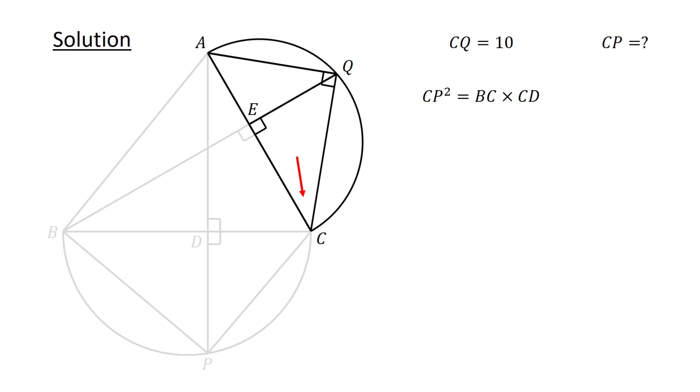In right triangle ACQ, we have cosine phi equals CQ over AC. And in right triangle QEC, we have cosine phi equals CE over CQ. Thus, CQ over AC equals CE over CQ. Or, after cross multiplying, CQ squared equals AC times CE.